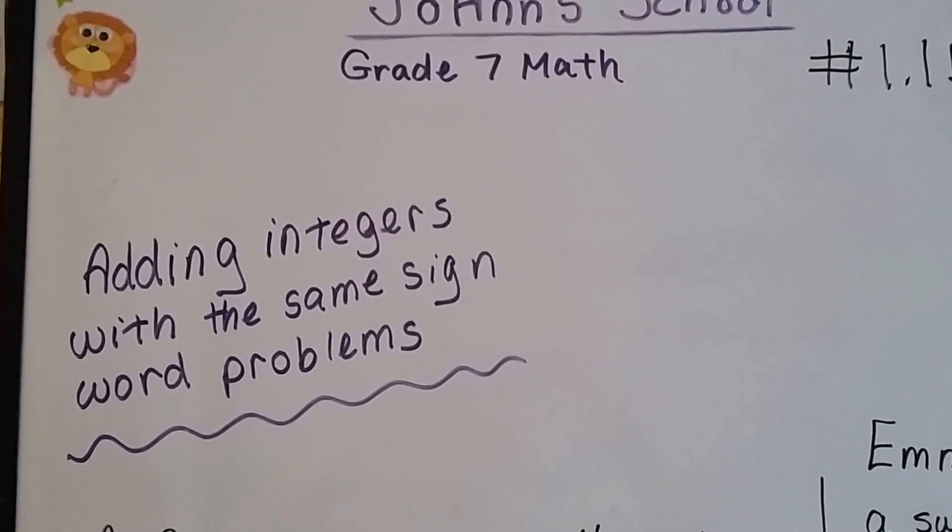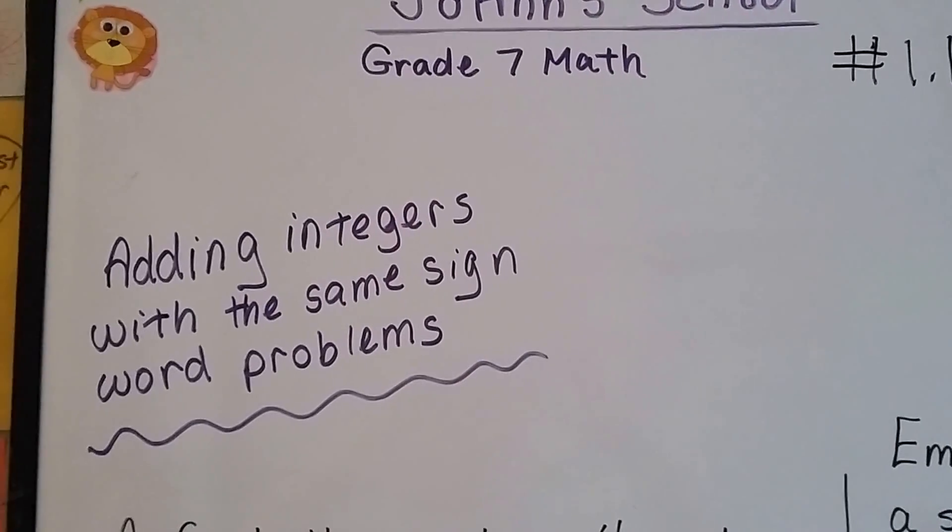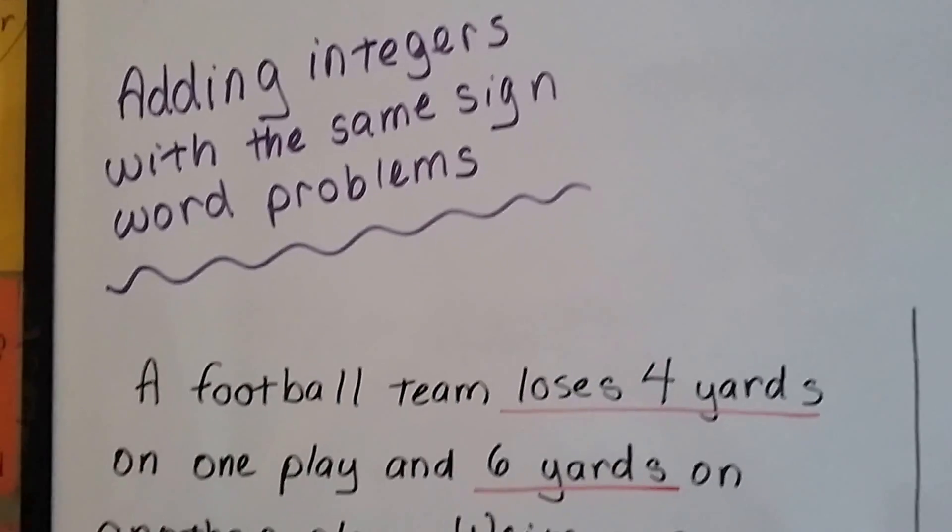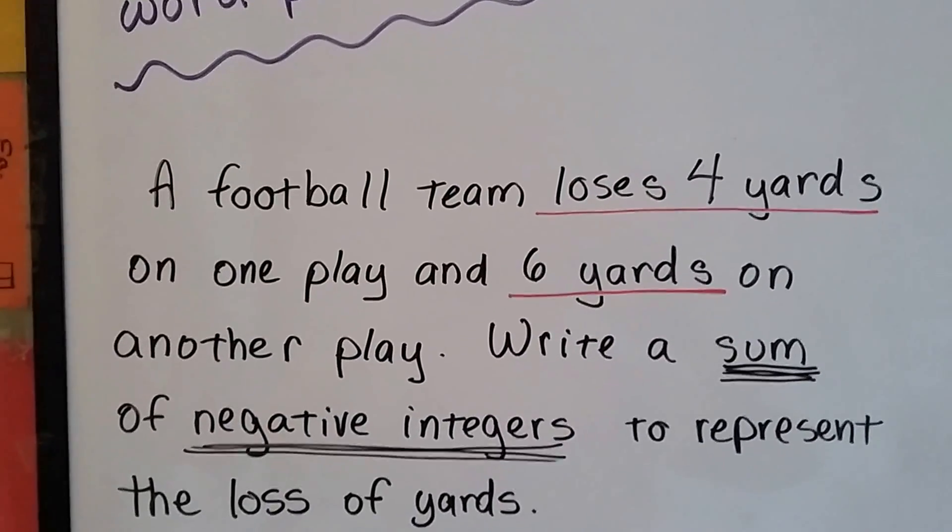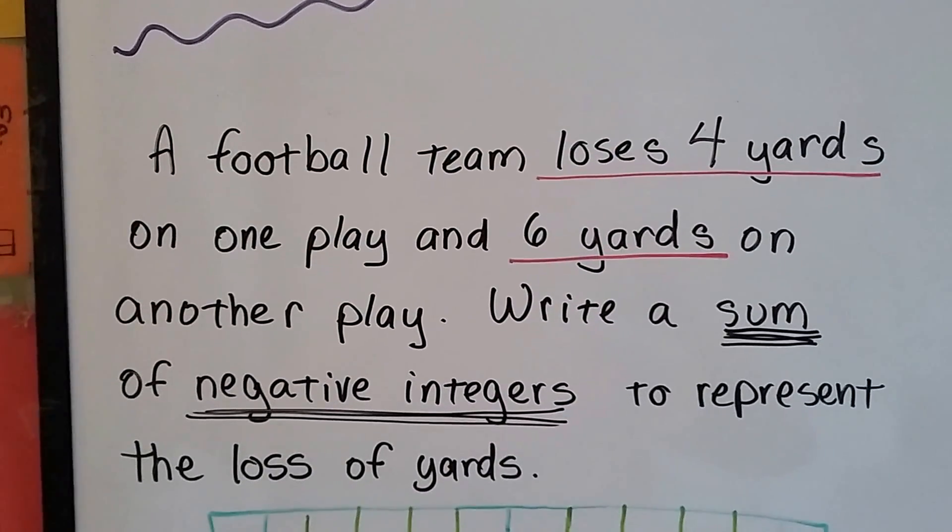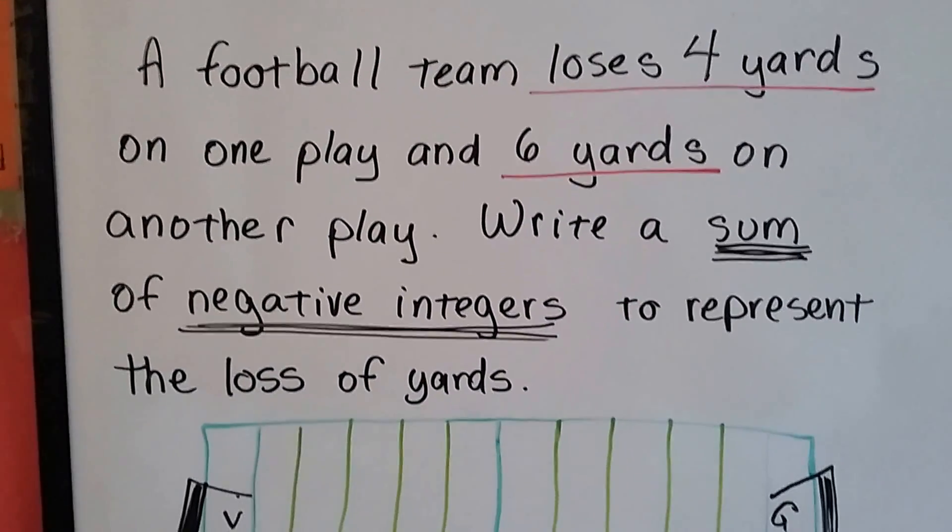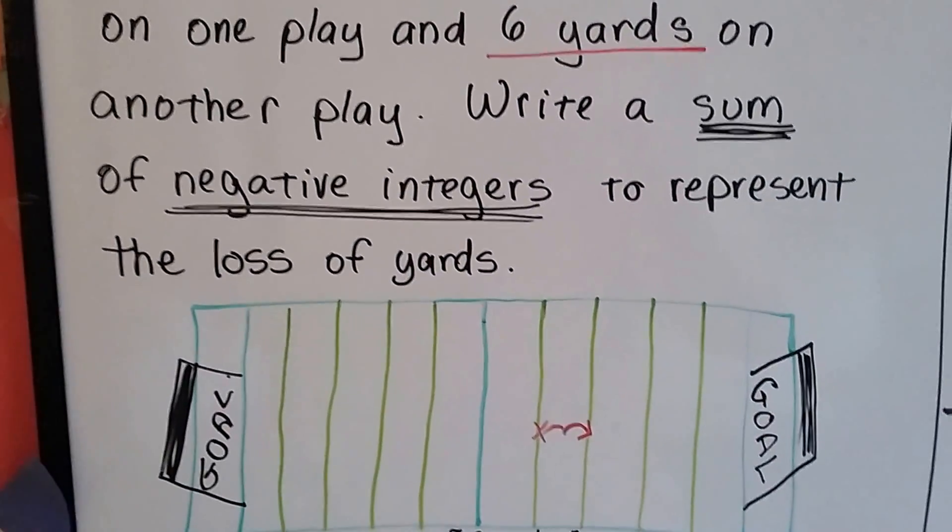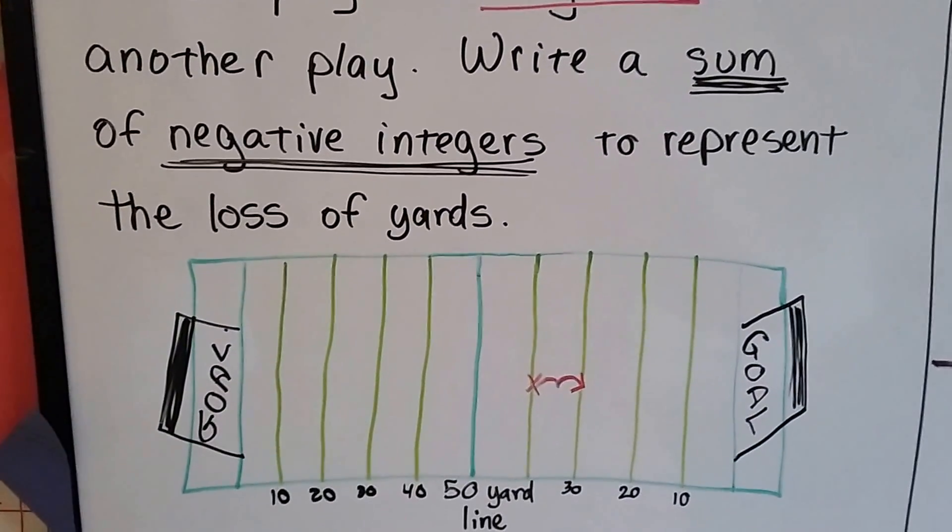Grade 7 math number 1.1b adding integers with the same sign word problems. A football team loses four yards on one play and six yards on another play. Write a sum of negative integers to represent the loss of yards.